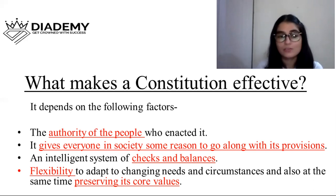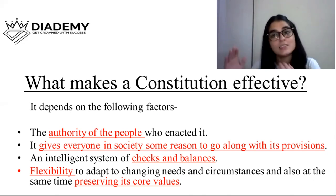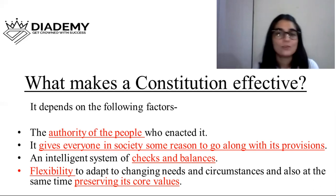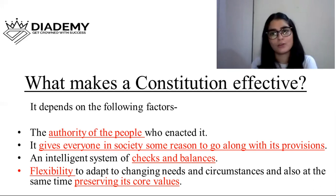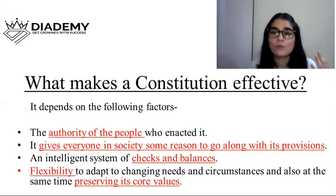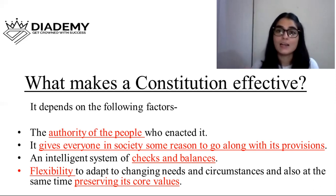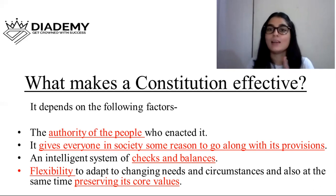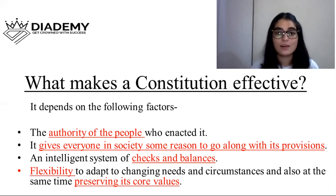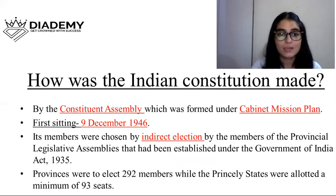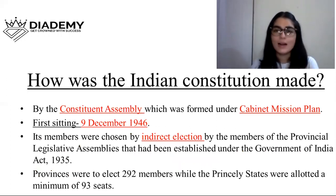Another factor that makes a Constitution effective is flexibility to adapt to changing needs while preserving its core values. With changing times some laws need to be amended, so the Constitution should be flexible enough to add or amend provisions. However, it should not be so flexible that core values are lost. In India we talk of the basic structure of the Constitution — various provisions can be amended but the basic structure must be maintained at any cost.